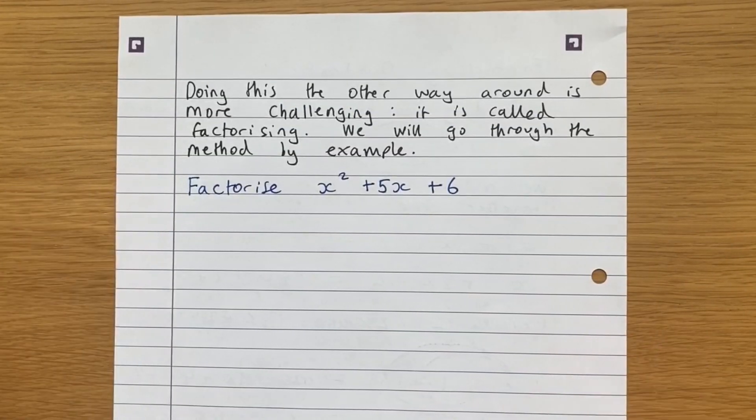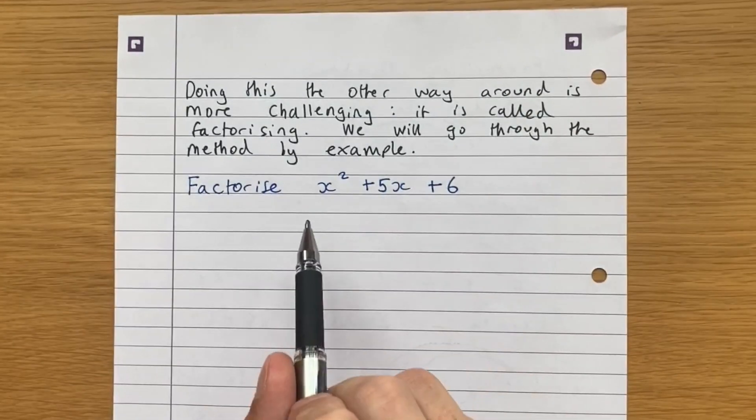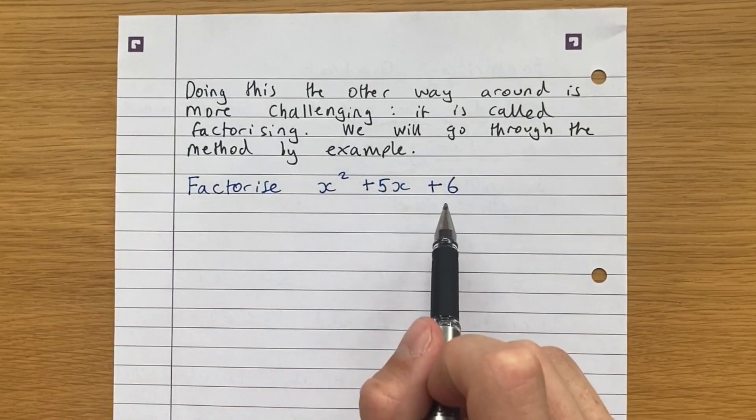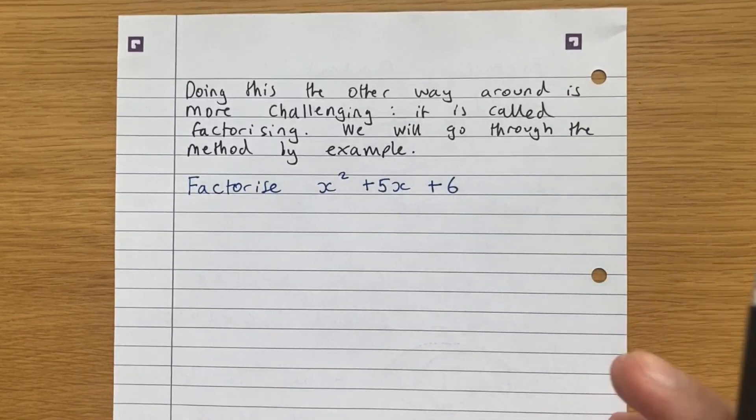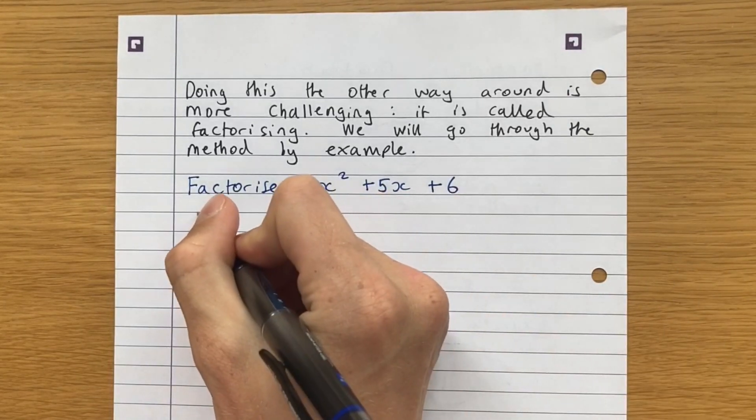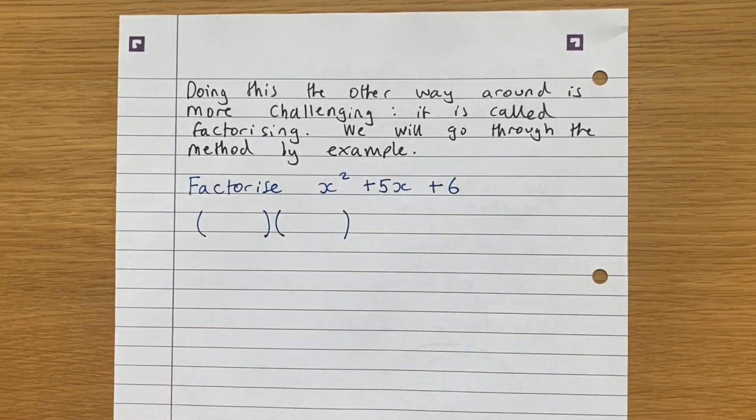So doing this the other way around is a lot more challenging. It's called factorising. So we're going to go through the method by example. So if we're asked to factorise x squared plus 5x plus 6, what it's asking us to do is to put this in the form of two brackets.